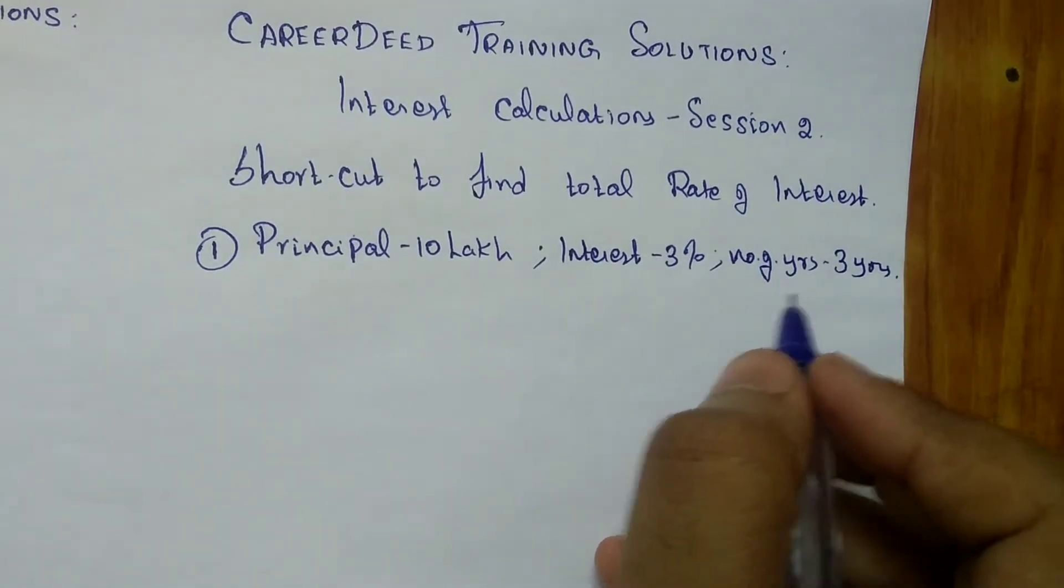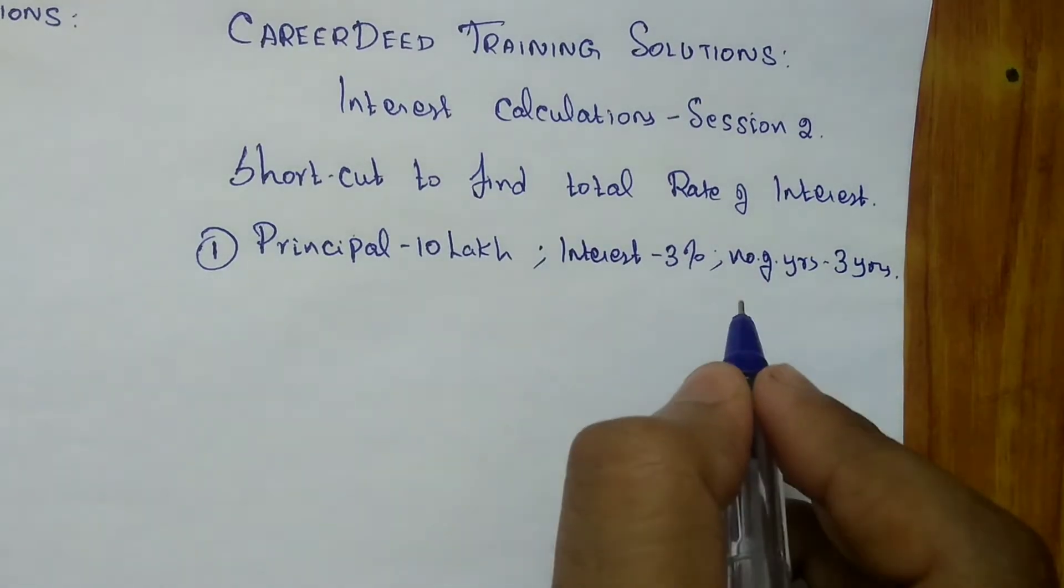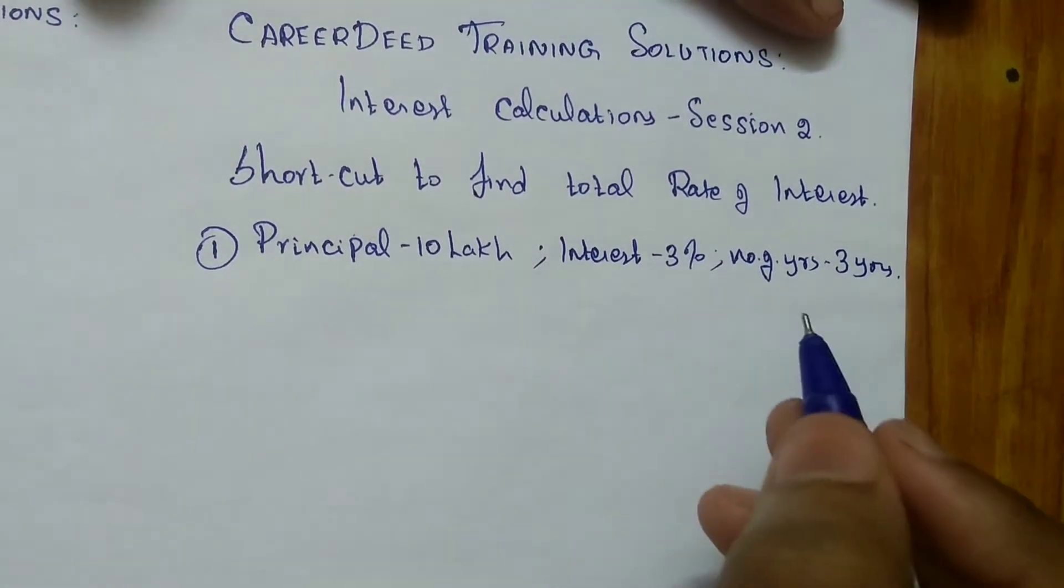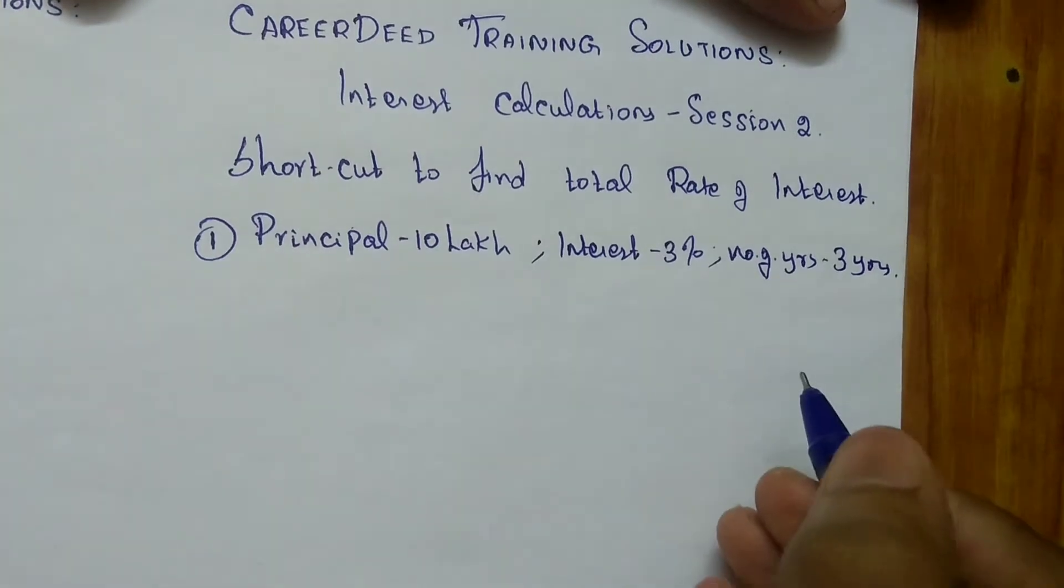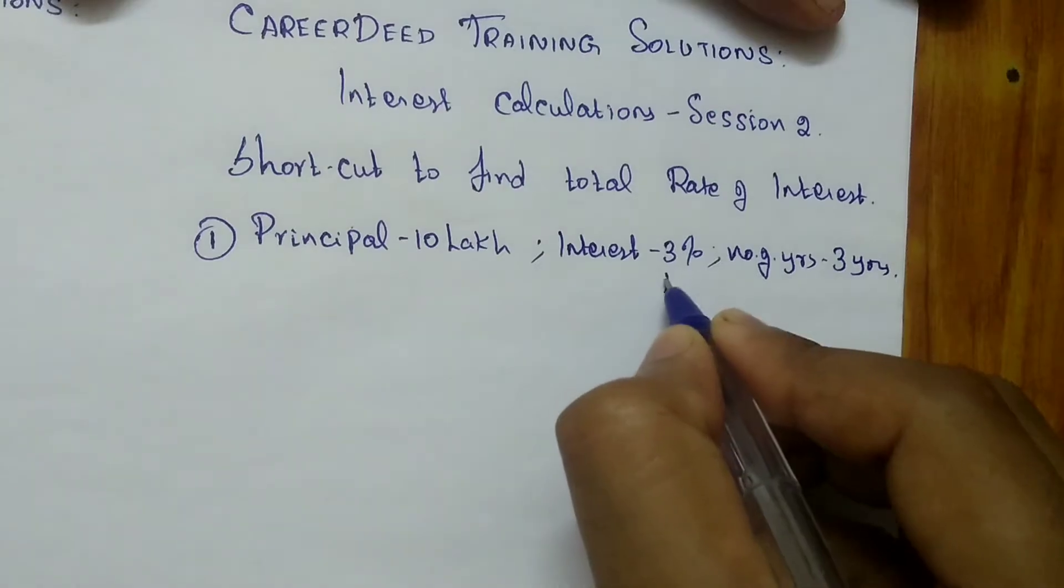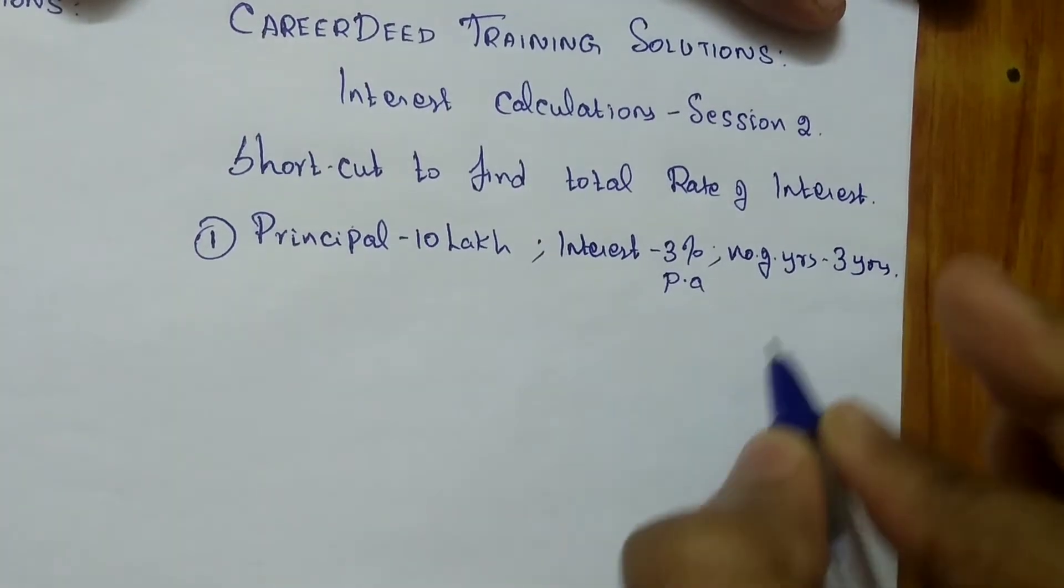Let us check how this works both on simple and compound interest. In simple interest, you don't need to use any formulas. So it's quite simple. Now here it is given 3% per annum.